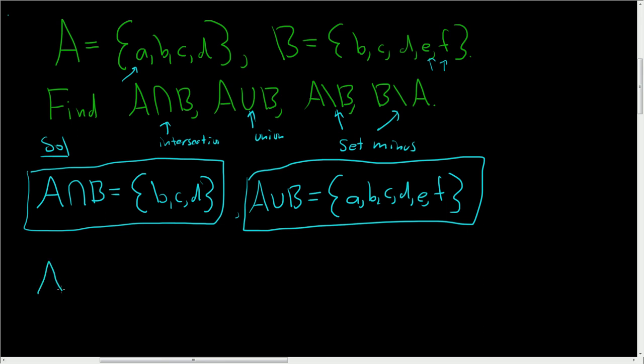Let's look at A set minus B. So this is everything in A, but not in B. Well, we know B, C, D are both in A and B, so the only thing in A that is not in B is little a. So A set minus B is just the set containing little a.